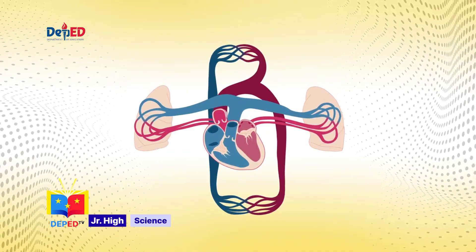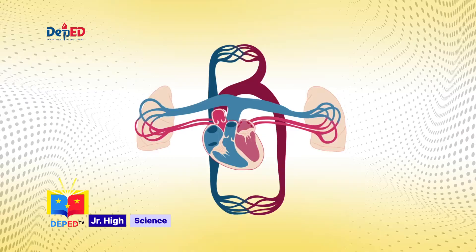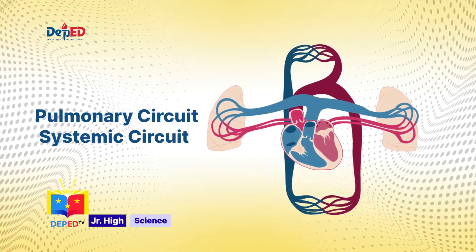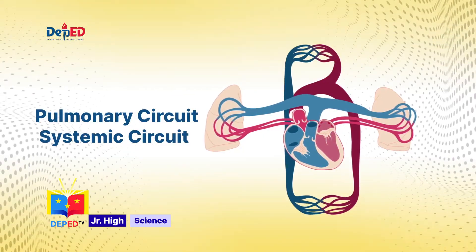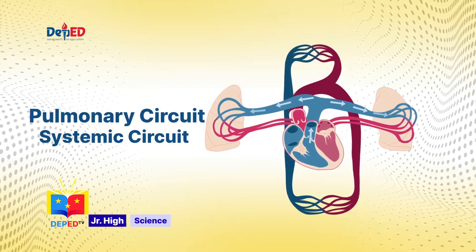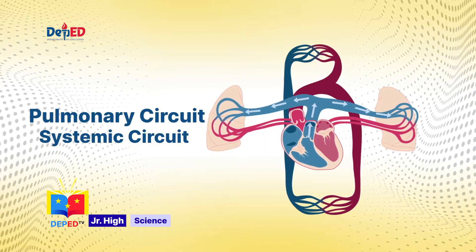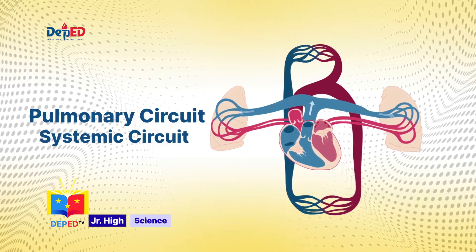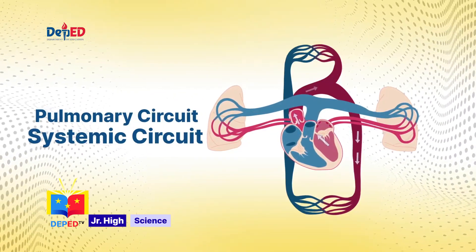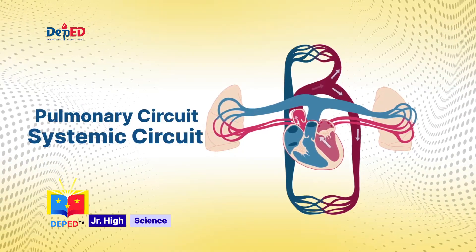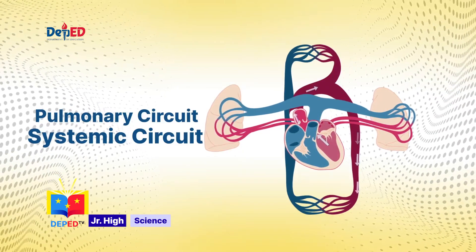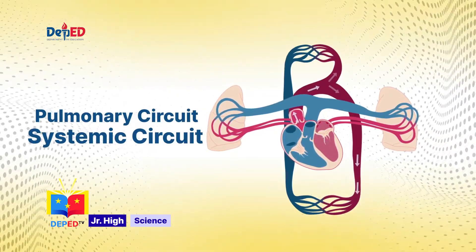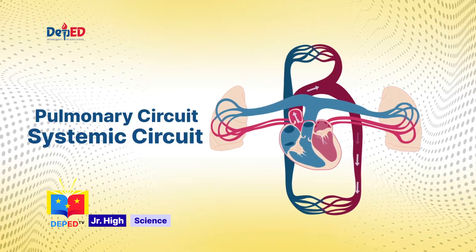There are two distinct but linked circuits in the human circulation, called the pulmonary and systemic circuits. Both circuits transport blood and gases. The pulmonary circuit transports blood to and from the lungs, where it picks up oxygen and delivers carbon dioxide for exhalation. The systemic circuit transports oxygenated blood to virtually all of the tissues of the body and returns relatively deoxygenated blood and carbon dioxide to the heart to be sent back to the pulmonary circulation.